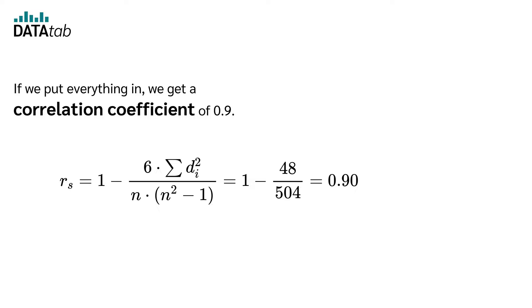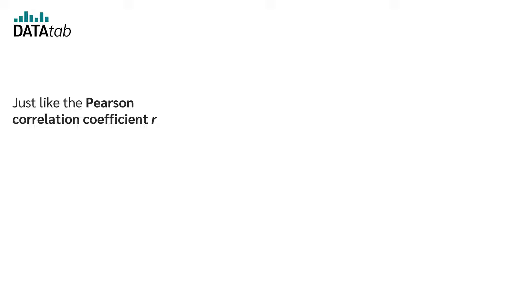n, which is the number of people, is also 8 in this example. If we put everything in, we get a correlation coefficient of 0.9.